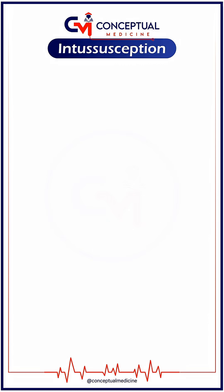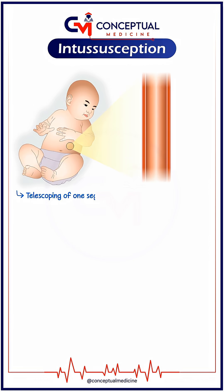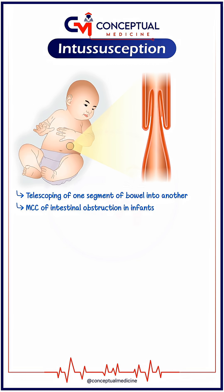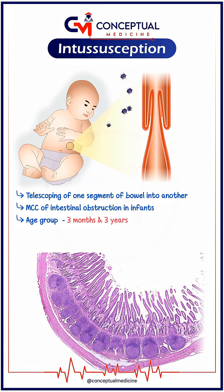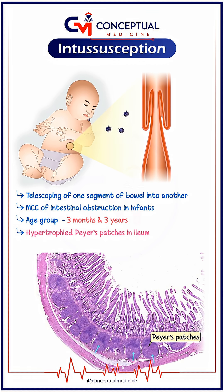Let's discuss intussusception. Intussusception refers to telescoping of one segment of bowel into another and it is the most common cause of intestinal obstruction in infants. The peak age group is between three months and three years. It often follows a viral infection because the Peyer's patches in the ileum become hypertrophied and act as a site for telescoping.